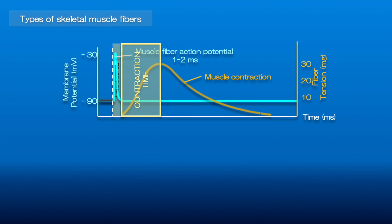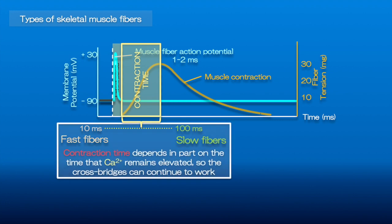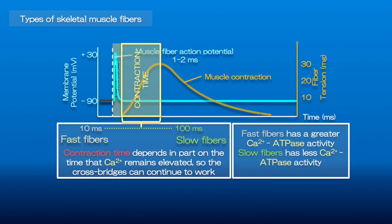Not all skeletal muscle fibers have the same twitch contraction time. Some fast fibers have a contraction time as short as 10 milliseconds, while slower fibers may take 100 milliseconds or longer. The total duration of contraction depends in part on how long cytosolic calcium remains elevated so that cross-bridges can continue to cycle. This is closely related to the calcium ATPase activity in the sarcoplasmic reticulum, which is greater in fast twitch fibers and less in slow twitch fibers.